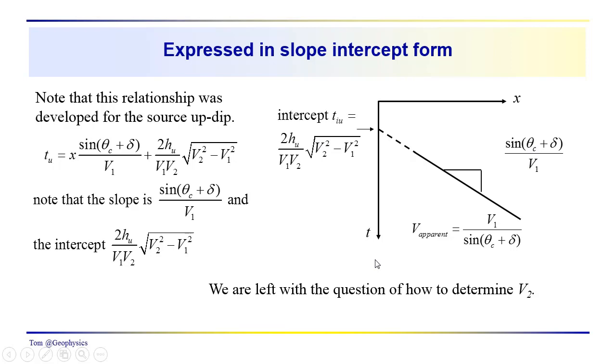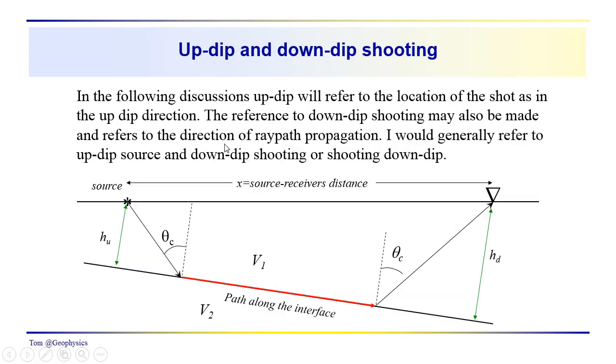And so just a note on the nomenclature and the terminology that I'll use. I'll be referring to the up-dip direction as the direction where the shot is located. So if we're talking about the time, T sub U would be referring to the time-distance relationship with the source in the up-dip direction. T sub D would be referring to time-distance relationship with the source in the down-dip direction. So may refer to down-dip shooting, and that would be the direction in which the ray paths are going. Source would be up-dip. So I would generally refer to up-dip source and down-dip shooting or shooting down-dip, something like that.